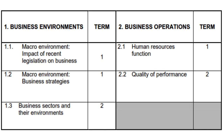Let us have a quick look at the topics. Module 1 is business environments and it has three topics: legislation, business strategies, and business sectors. Module 2 is business operations which only has two topics: human resource function and quality of performance. Based on the workload, business operations has less content to study and I believe it would be a better choice for many, though some learners would prefer business environments. Choose carefully and decide ahead of time.